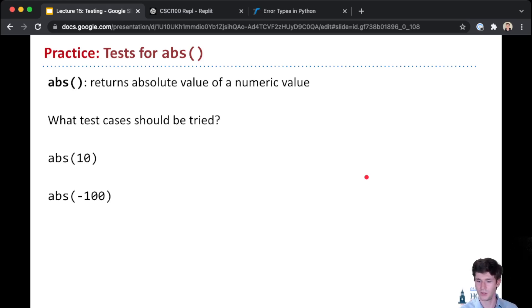But one of the edge cases here is we want to make sure that the absolute value of 0 is 0. That's kind of a corner case or an edge case because it's kind of weird—it's on the boundary between positives and negatives.